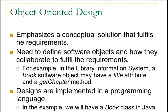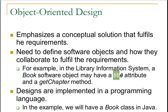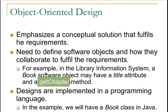For example, in a library information system, a Book software object may have a title attribute and a getChapter method. When we find a noun concept in a domain, that noun becomes a class. This class has an attribute like 'title' and a method like 'getChapter' — this is a conceptual collaboration showing how we can solve the problem in terms of concepts.